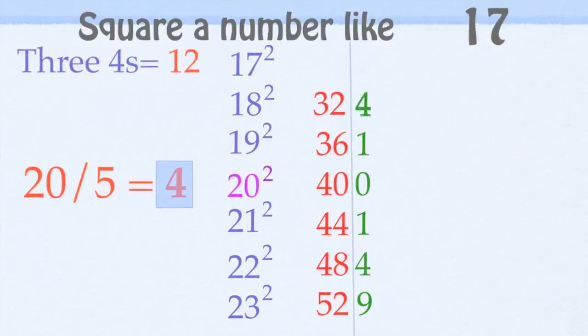17 squared is 3 4's away, is 12. That's 28. And 7 times 7 is 49, we bring our 9 over, and 17 squared is 289.